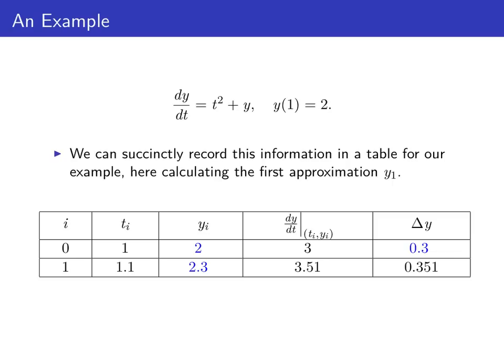We can record all the accumulated information nicely in a table. The columns are: i (the approximation number), tᵢ, yᵢ, dy/dt at (tᵢ, yᵢ), and Δy. Starting at i = 0 with the initial condition: t₀ = 1, y₀ = 2. We use the differential equation to find dy/dt at (t₀, y₀) = 3. Then Δy = 3 × 0.1 = 0.3. To get y₁, we add the old y value 2 to Δy 0.3, giving y₁ = 2.3.